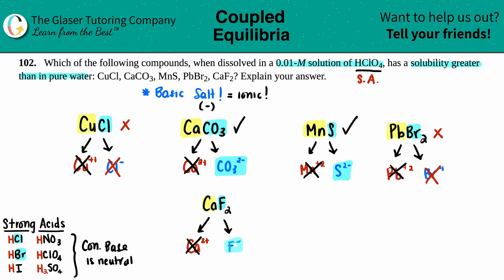And then the last one is F-. Do I see F on my list of strong acids? No. So this makes the cut.